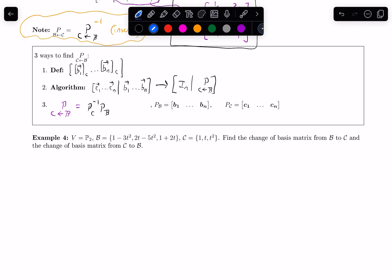In this video, we are going to do an example where we use the change of basis matrix on polynomials. So the example says let's let V be the vector space P2, so this is all polynomials of degree at most 2.